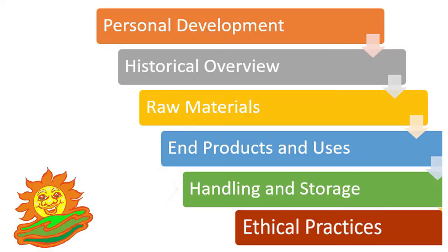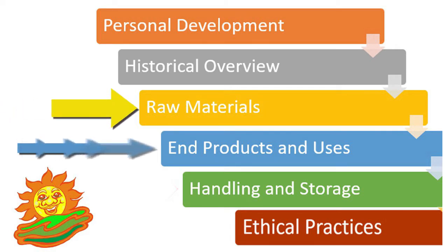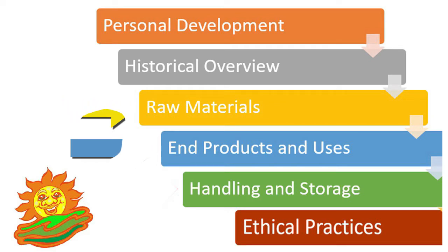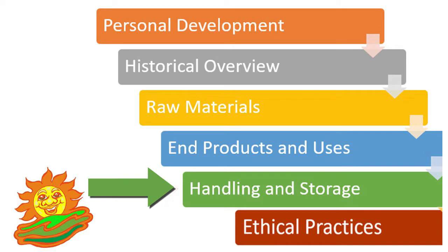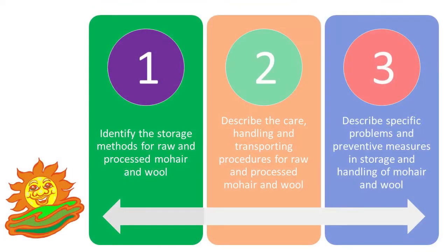In sections B and C you learned about the raw materials used and the end products made in your factories. In this section, Section D, you will consider how these materials and products need to be handled and stored. After completing this section, you will be able to identify and describe the storage methods and facilities for raw and processed mohair and wool.